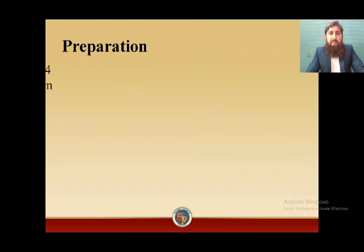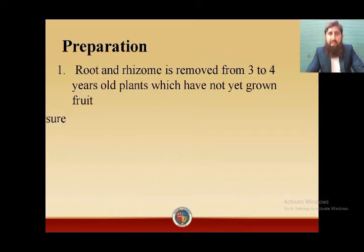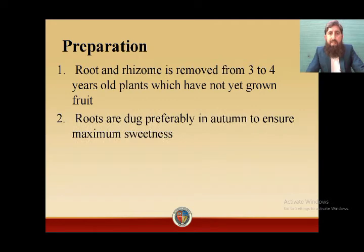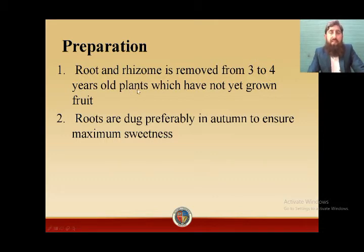Preparation of Glycyrrhiza glabra consists of four parts. Number one, the root and rhizome are removed from three to four year old plants. Remember this — only three to four year old plants will yield the desired compound, because if you take the root or rhizome of a plant that is not mature enough, it will not have sweet constituents.